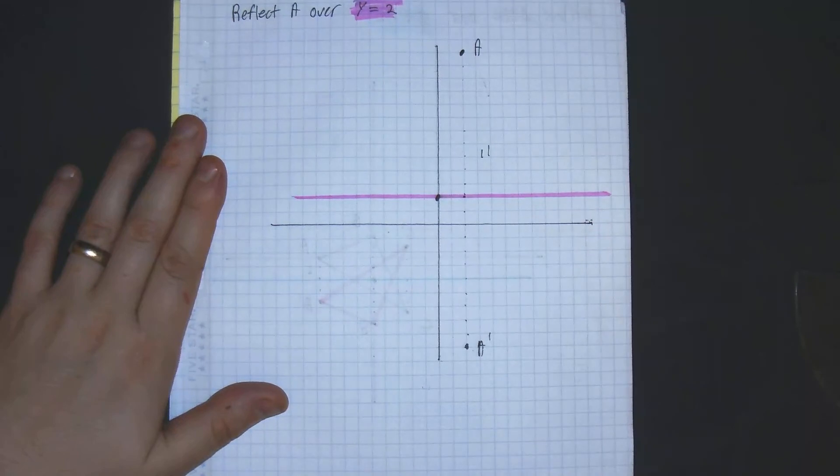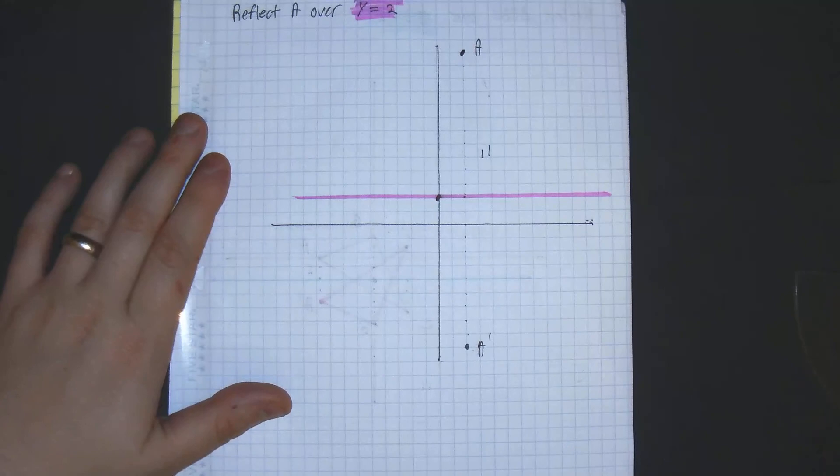A prime is right there. And there you have it. That is reflecting A over y equals 2.